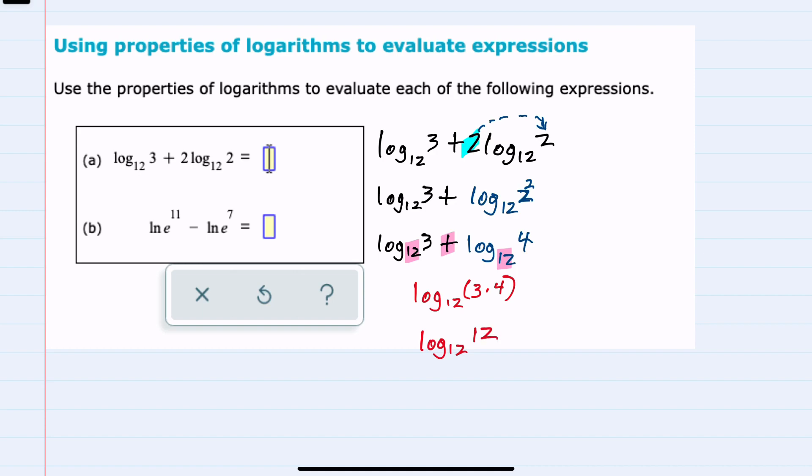And logarithms are asking the question, 12 raised to what power gives me 12? 12 raised to the first power is 12. So expression A here simplified all the way to just 1.